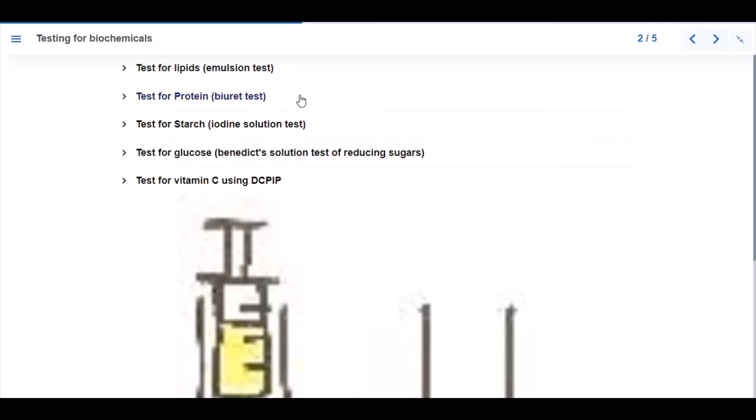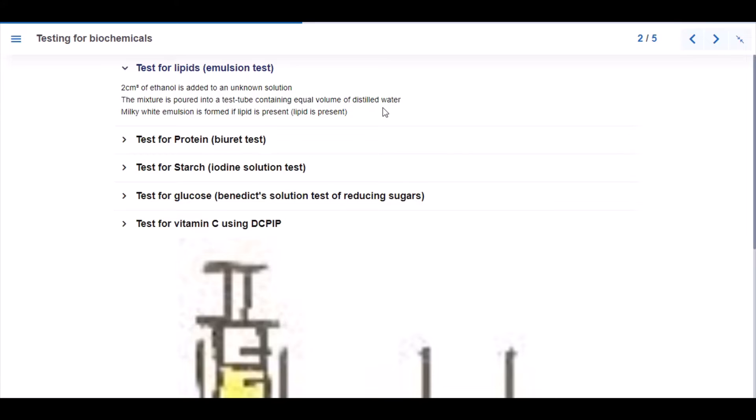To carry out the test for lipids, we have 2 cm³ of ethanol, which is added to an unknown solution. The mixture is poured into a test tube containing equal volume of distilled water. Milky white emulsion is formed if lipid is present.